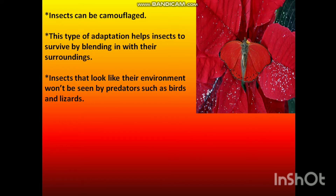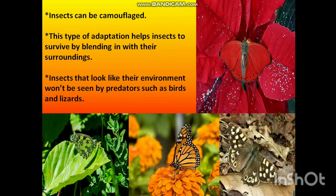Look at the picture carefully. What can you observe? Here, the butterfly has camouflaged itself. Most insects can camouflage themselves. This type of adaptation helps insects to survive by blending in with their surroundings. Insects that look like their environment won't be seen by predators such as birds and lizards.